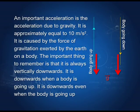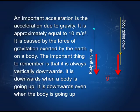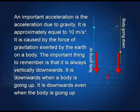An important acceleration is the acceleration due to gravity, approximately equal to 10 m/s² near the surface of the earth — the exact value is 9.81 or 9.82 m/s². It is caused by the force of gravitation exerted by the earth on a body. The important thing to remember is that it is always vertically downwards. Even if the body is going up, the acceleration due to gravity is acting downwards. Acceleration due to gravity is always vertically downwards.